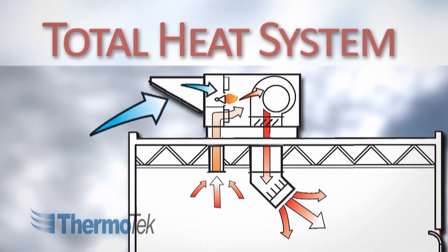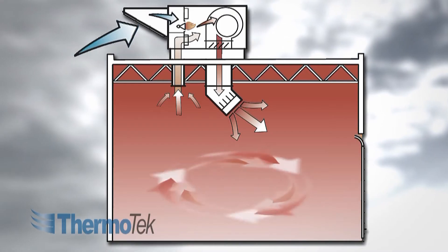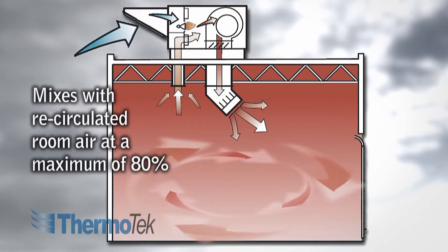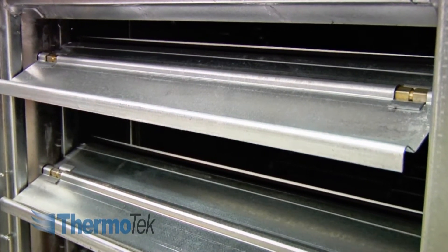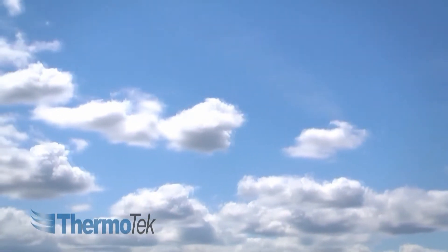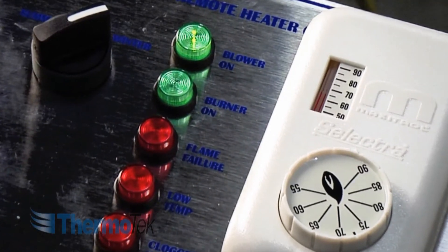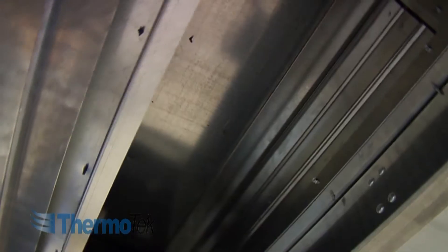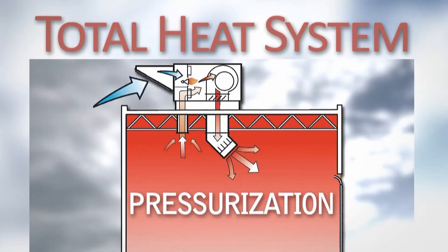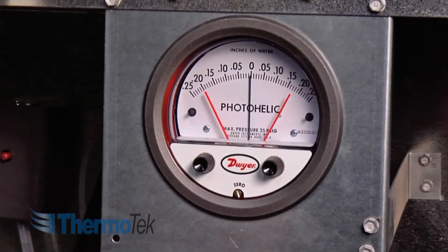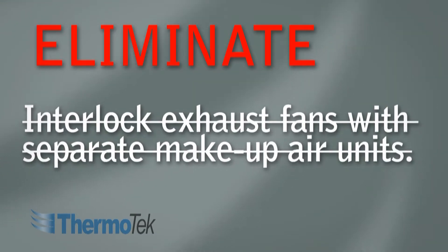The recirculation total heat system supplies at least 20% fresh outside air into the building and mixes with existing room air at a maximum of 80%, with the return air fully bypassing the burner. A building static pressure controller modulates the interlinked outdoor and return air dampers, introducing more fresh air as the building's exhaust and infiltration load changes. The recirculation system is simple to operate and maintain, with both heating and fresh air capabilities combined into one unit. With its ability to control building pressure, the total heat system automatically manages fresh air percentages and space or discharge temperatures, eliminating the need to interlock exhaust fans with separate make-up air units.